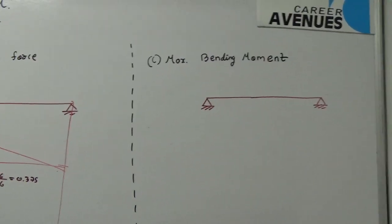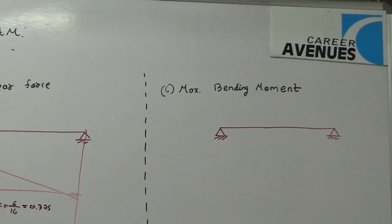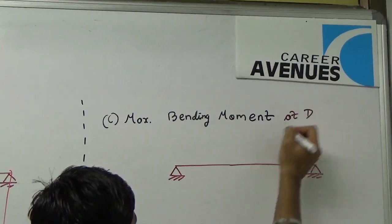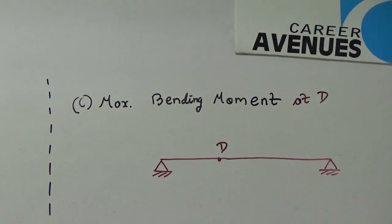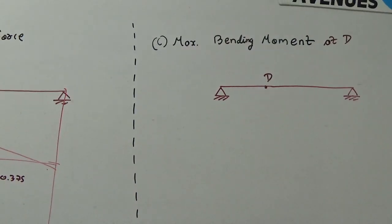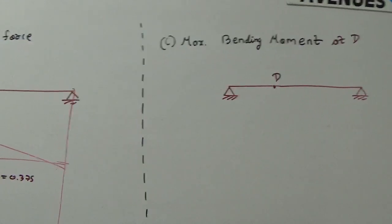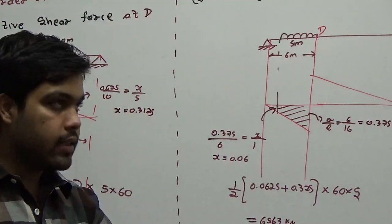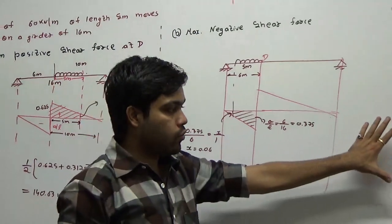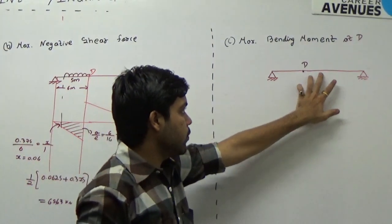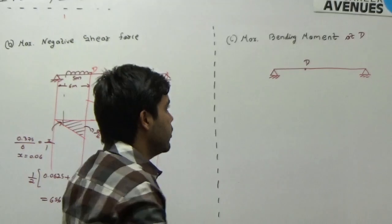We now find the maximum bending moment at D. For absolute maximum bending moment, you would simply place the UDL at the center. However, since a specific location D is given, we need to find the optimal UDL placement over D, which requires solving for the position variable x.